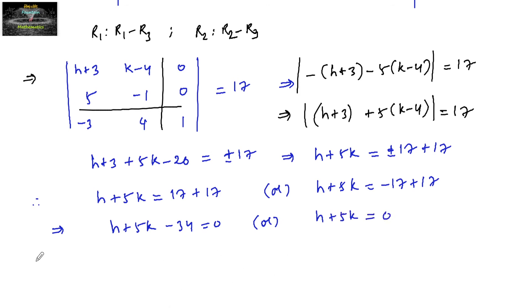So the combined equation of both these two straight lines, both being taken H plus 5K minus 34, into H plus 5K is equal to 0.